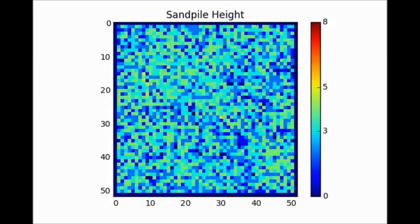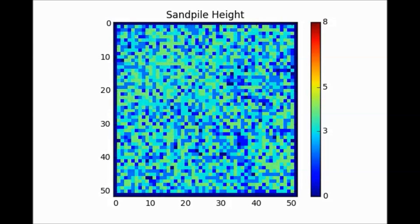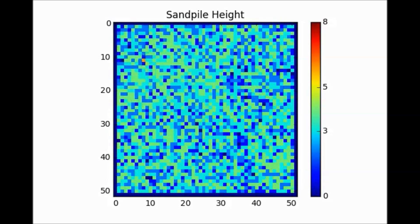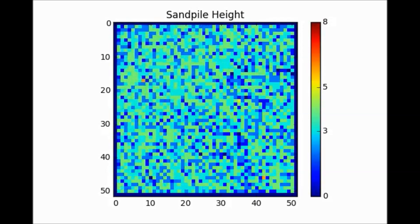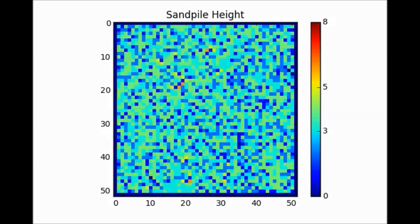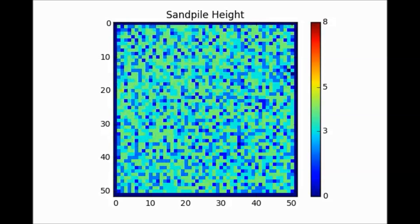The avalanches are clearly necessary in order to relax the grain pile, but we also notice an unpredictability concerning the size of the avalanches. An avalanche is triggered the moment we add a grain that causes the local height to exceed the critical value.